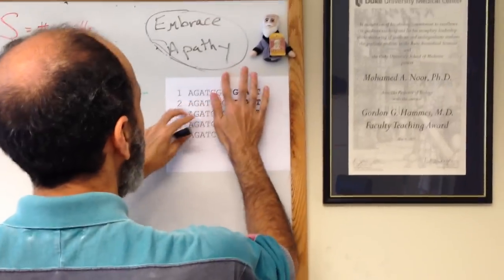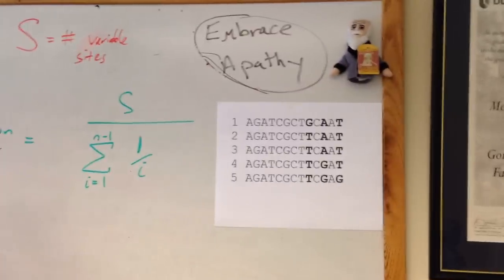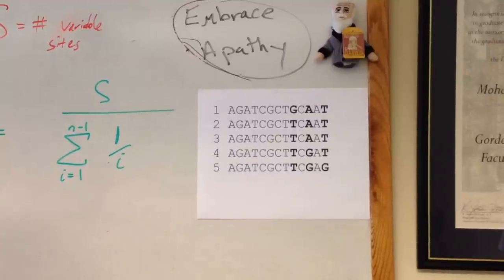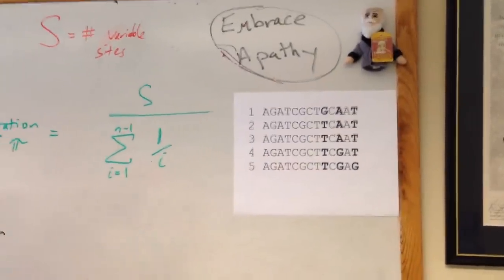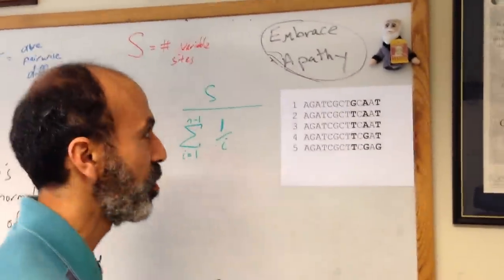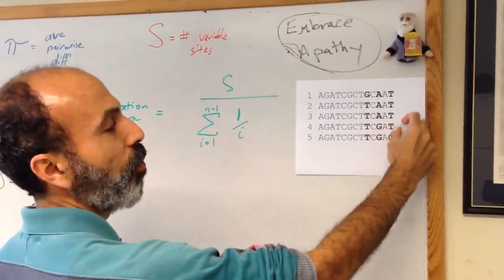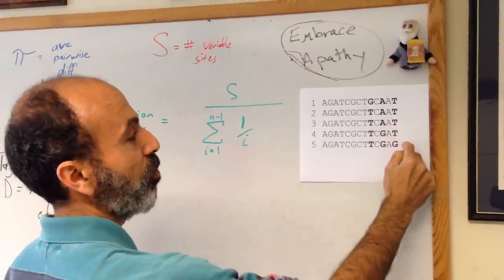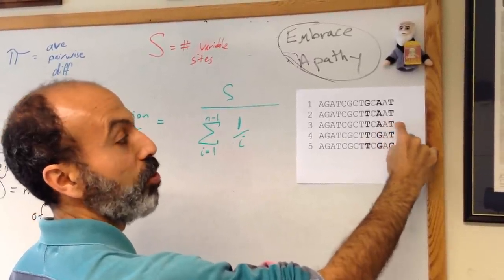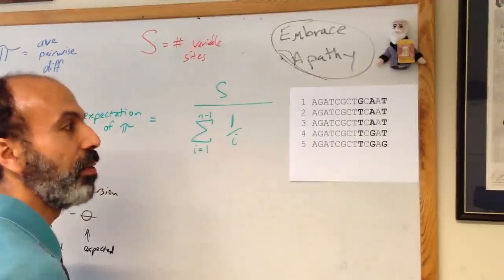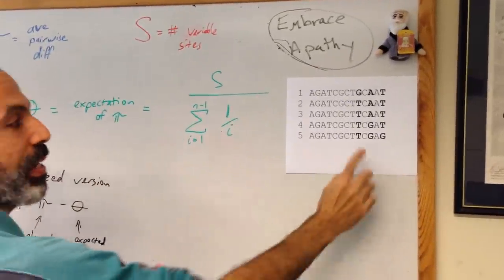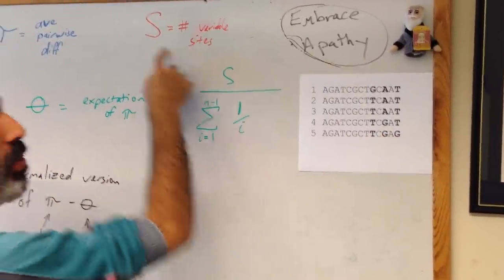Here's a population that's pretty close to what you might expect at a natural steady state. I'm looking at five sequences. Let's just pretend these individuals are haploid. Individual 5 differs from individual 4 by one base. Individual 5 differs from individual 3 at two bases. There are three segregating sites, so S here is 3.